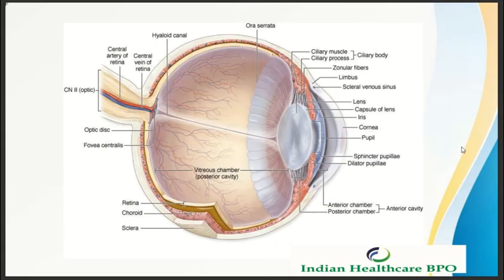Looking at the inner structure of the eye, we can notice the vitreous chamber, retina, choroid, sclera, fovea centralis, anterior chamber, and posterior chamber. In the internal structure we can also see the ciliary muscle, ciliary body, lens, iris, cornea, and pupil. These are the parts of the eye.